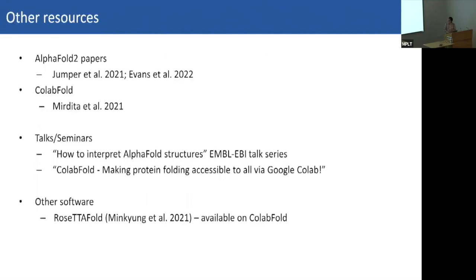For further resources: the original AlphaFold papers by Jumper et al. and the ColabFold paper are excellent reads. There are also two very good talks available on YouTube that explain AlphaFold and how it works much better than I have. There's also a similar approach using neural networks to predict structure called RoseTTAFold by David Baker's lab, which is available on the online ColabFold implementation.